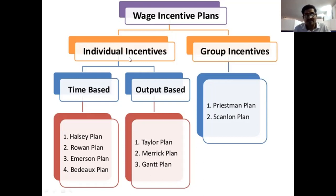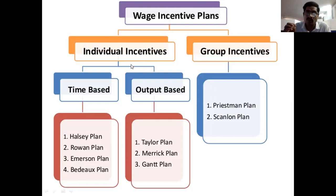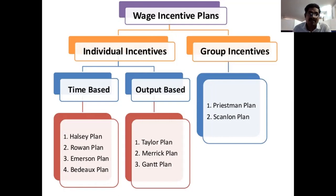Time-based incentives have four plans: Halsey plan, Rowan plan, Emerson plan, and Budox plan. For output-based incentives, we have Taylor, Merrick, and Gantt plans. For group incentives, we have two plans: Priestman plan and Scanlon plan. These are the four major plans particularly in time-based incentives.